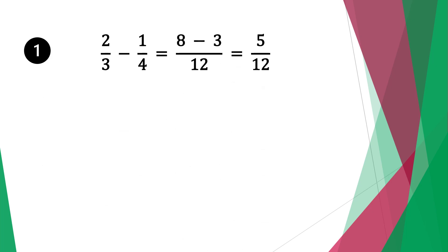Let's start with question one. We have two-thirds minus one-quarter. We don't have the same denominator, so we take a common factor by multiplying three by four to get twelve. Twelve is a common factor for three and four, so twelve divided by three is four.